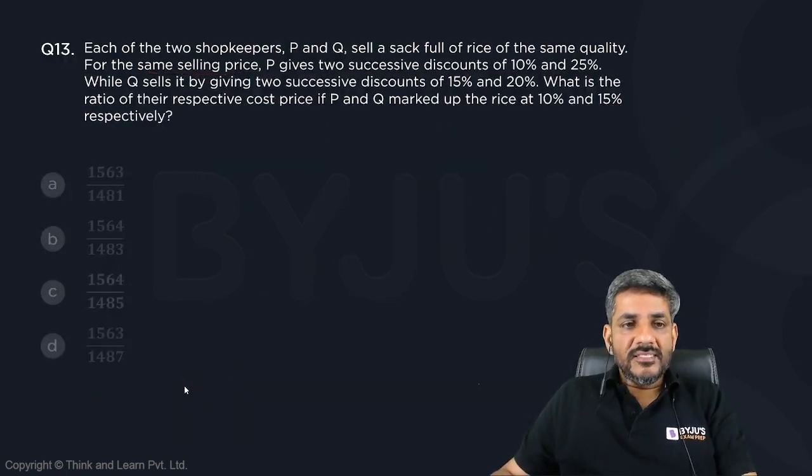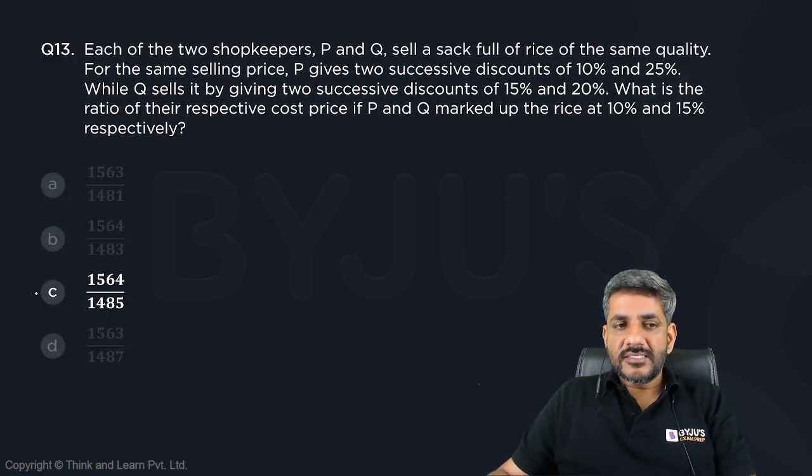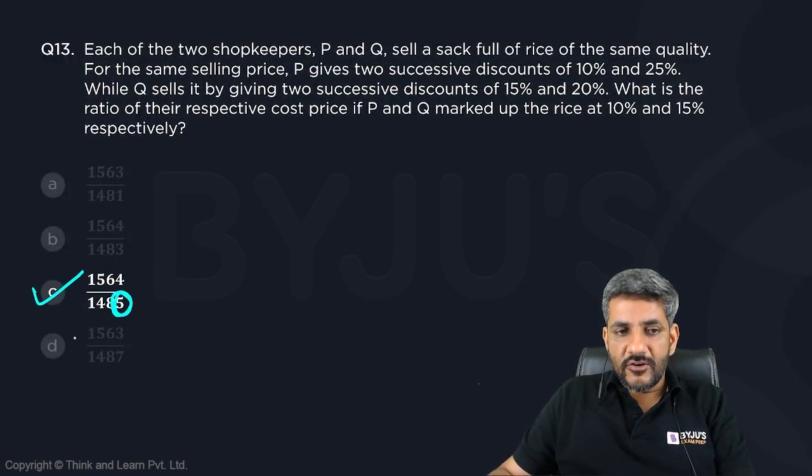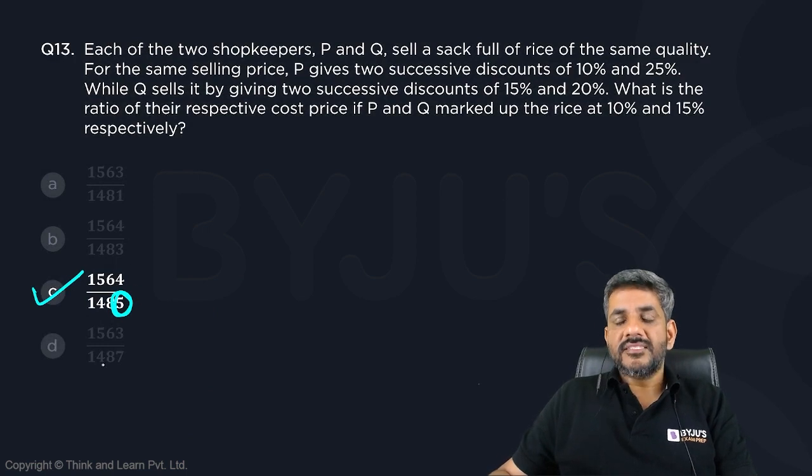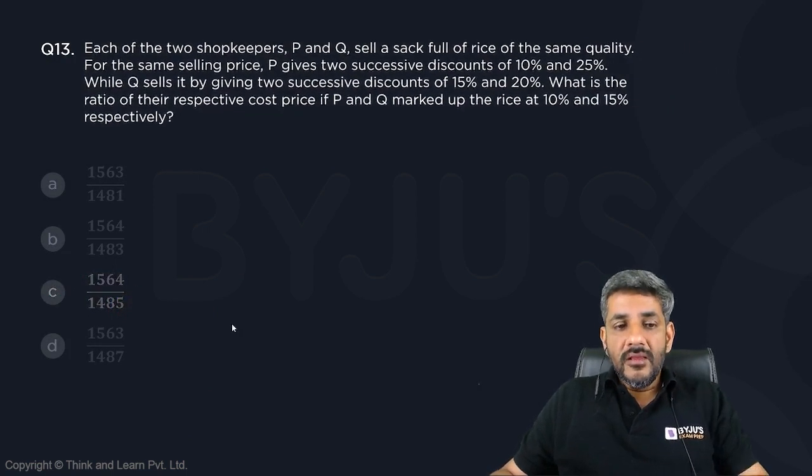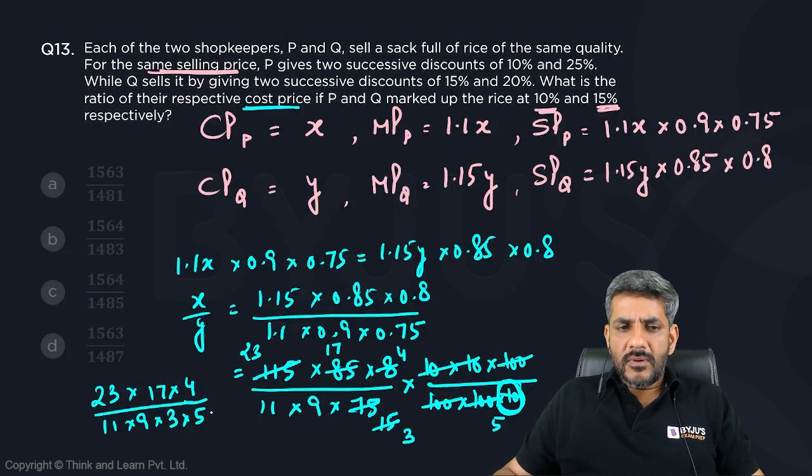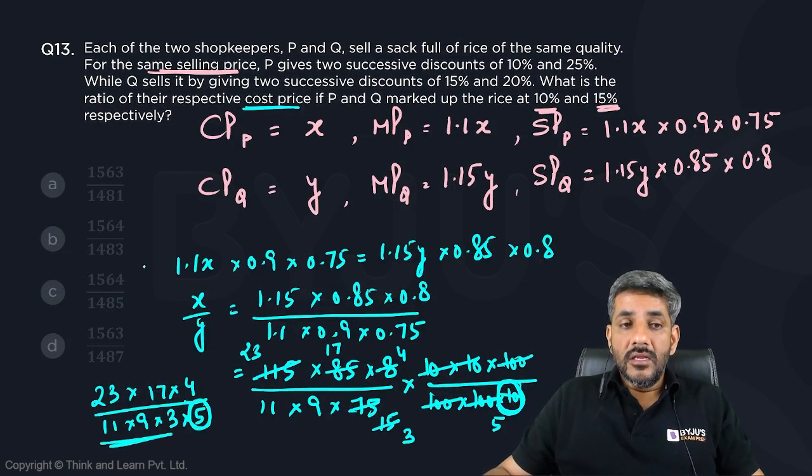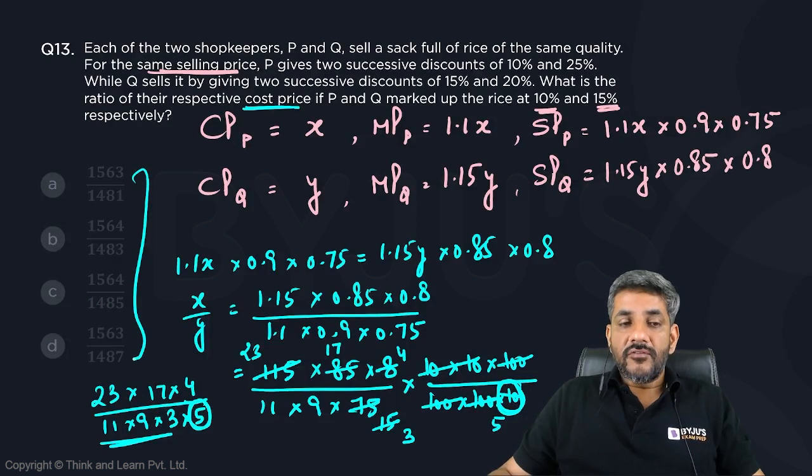Now, if you look at the answer options, we can answer it very fast. The simple reason is this 5 in the denominator. No other option has a 5 in the denominator. I don't need to multiply them. It's a multiple of 5 and an odd number. None of the options has a multiple of 5 as an odd number in the denominator. Therefore, option C is the right answer.